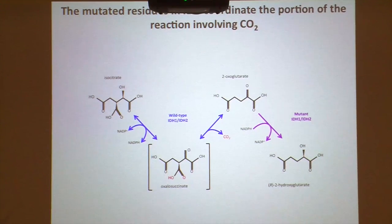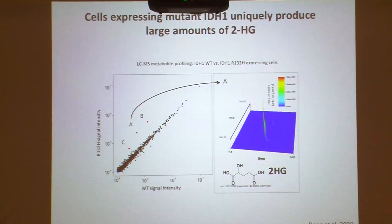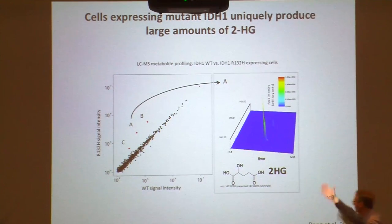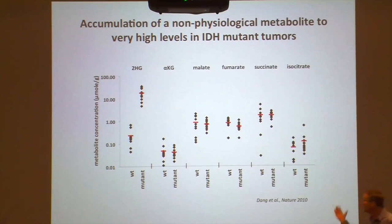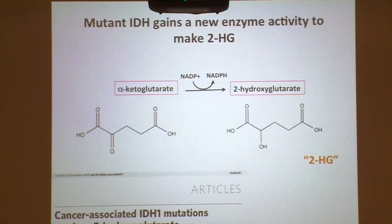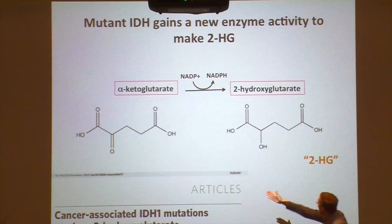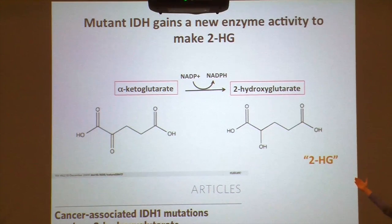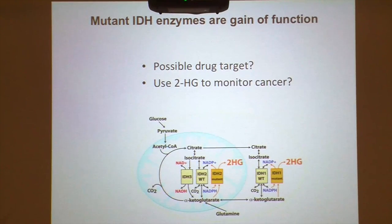2-hydroxyglutarate (2HG) is a metabolite not normally present at high levels in most cells. It was found by mass spec and was actually figured out by thinking through the biochemistry, even though the paper ultimately reported it via metabolomics. Remarkably, 2HG accumulates to ridiculous levels in the brain — in human glioma patients you can see on a log scale that 2HG accumulates very high, with no discernible change in alpha-ketoglutarate. This really changed thinking: IDH mutations are a gain-of-function to make 2HG, a metabolite that's normally not there.